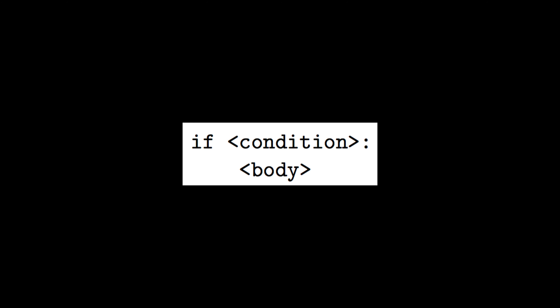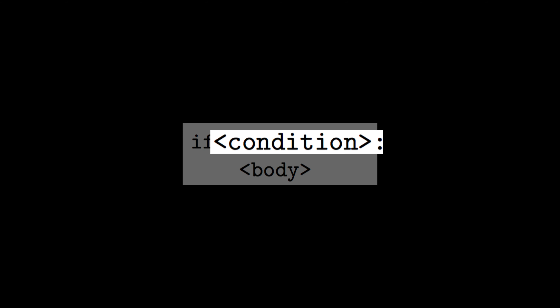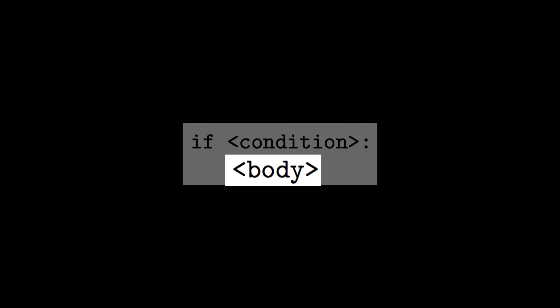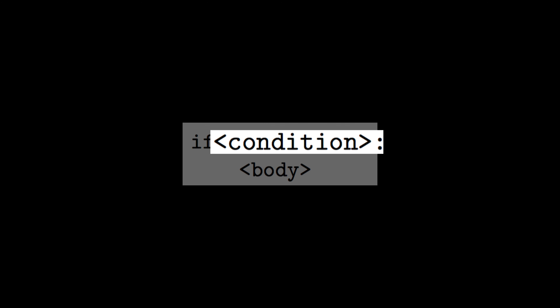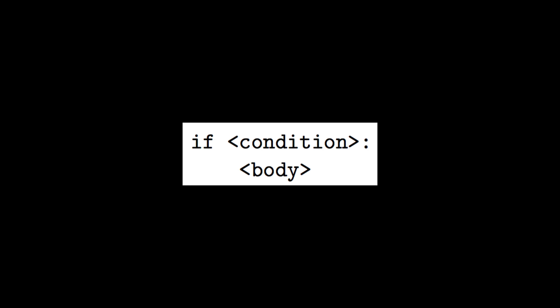Similar to the for loop, the code we want to execute if the condition is true is indented underneath the if statement. Since the body or statements for the if statement are indented, the if statement has a colon at the end of the line after the condition. The semantics are that the condition is evaluated: if true, the body executes and then continues after the if statement; if false, it skips the body and continues with the code after the if statement.